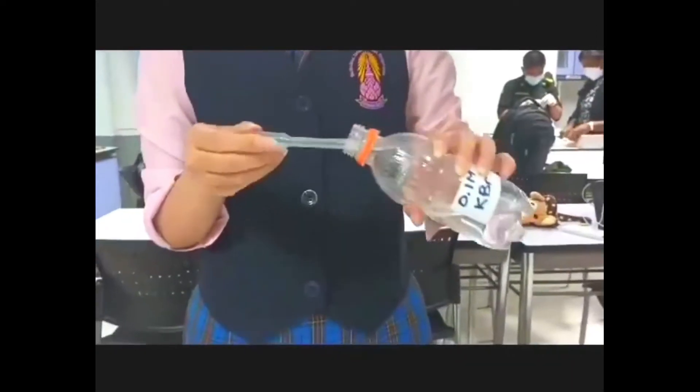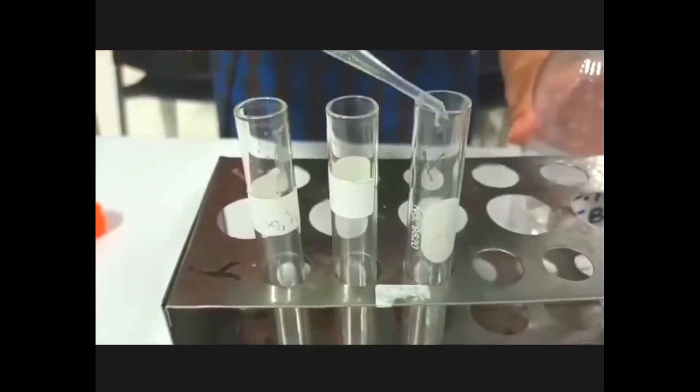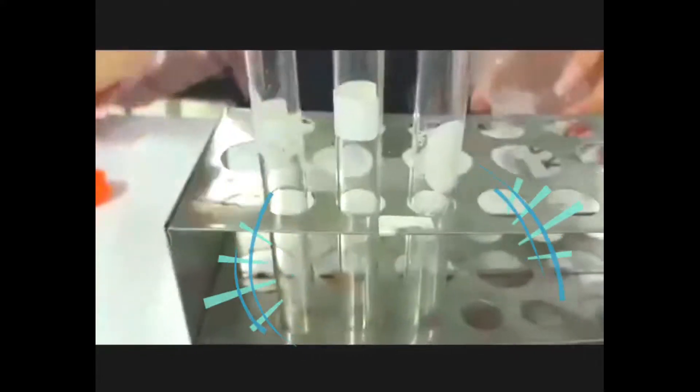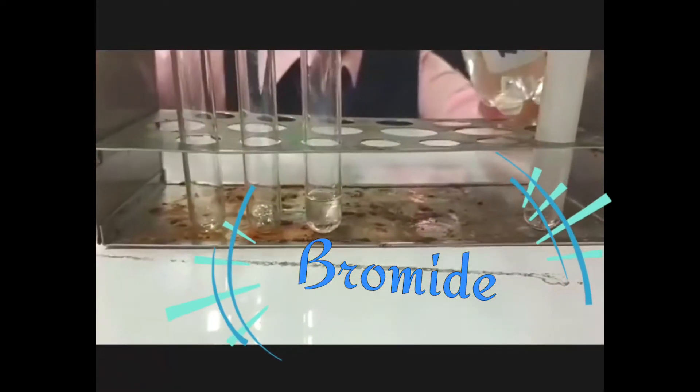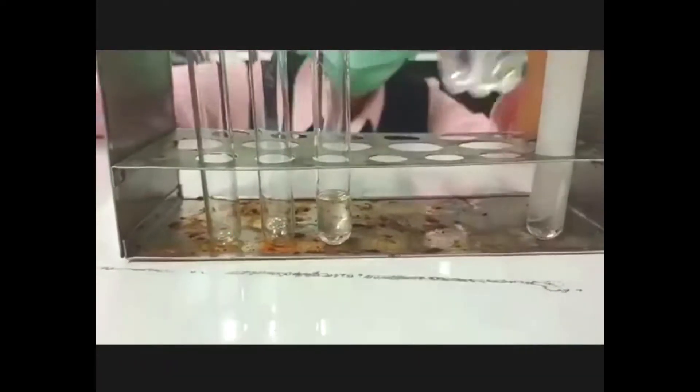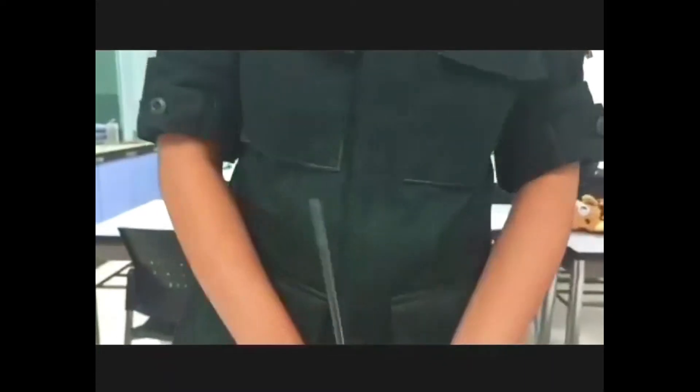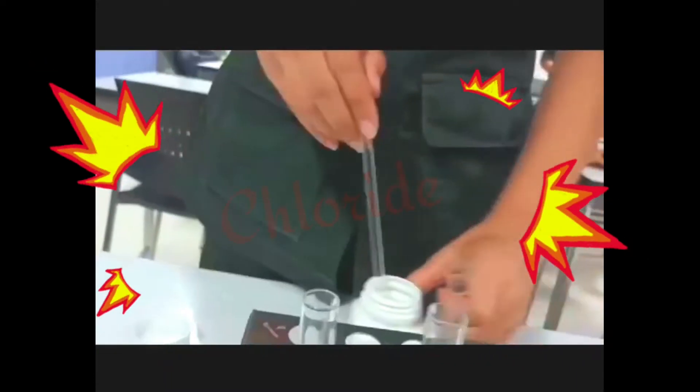Now we know that this test tube contains halide. For the first one, we're going to add some bromide. For the second one, we're going to add some sodium chloride.